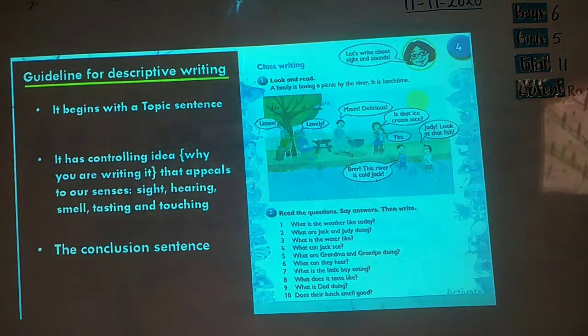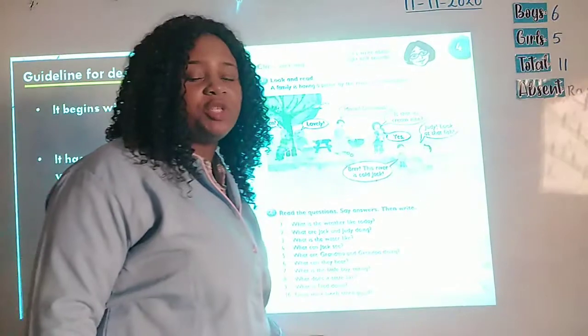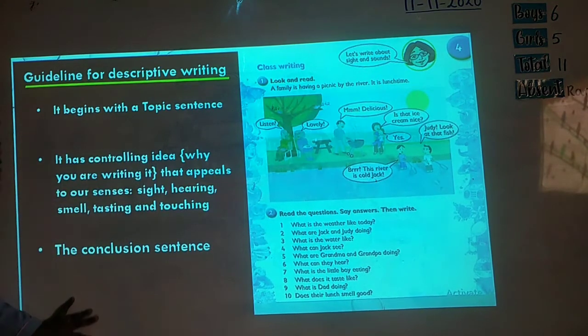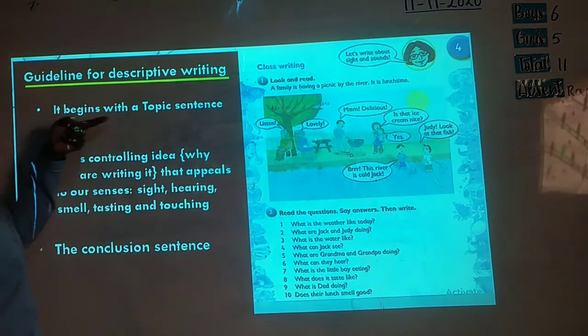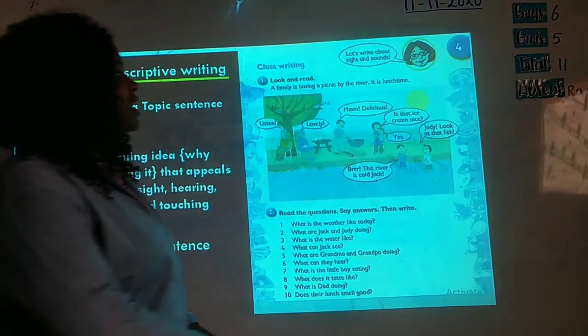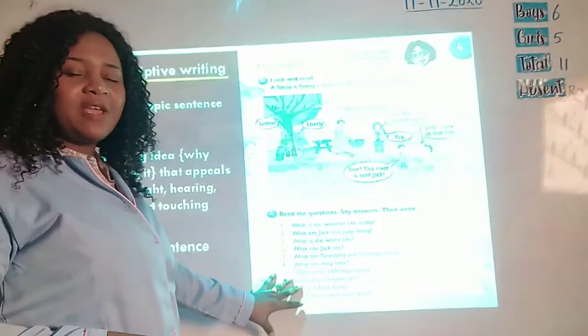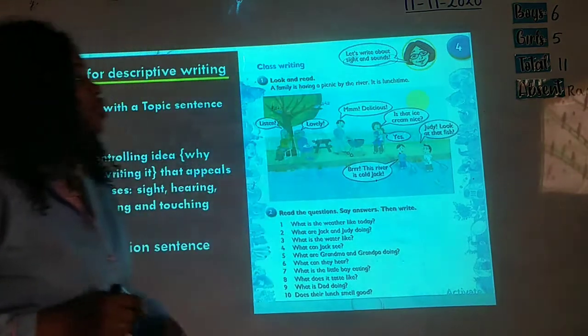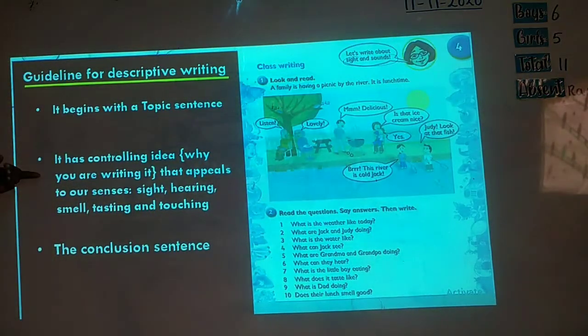So now we'll begin with our class writing. This is our activity on our language book, page 43. Here, this is the guideline to follow because in our objectives, we told you there are guidelines to follow in writing descriptive essay. One, it begins with a topic sentence. Look at the topic sentence they gave us here. Let's write about sight and sound. So now, the topic we are going to treat today or the answer we are going to develop is on sight and sound. So that is what we are going to be writing today. Your topic must be clear.